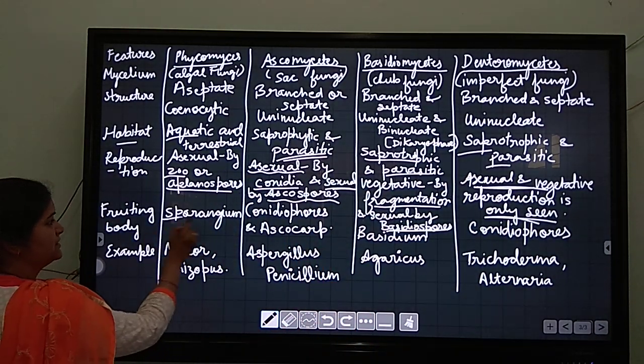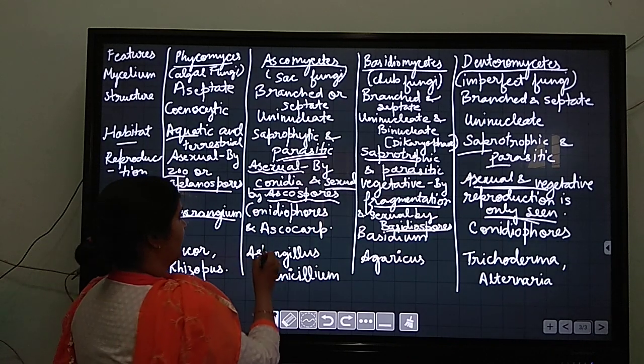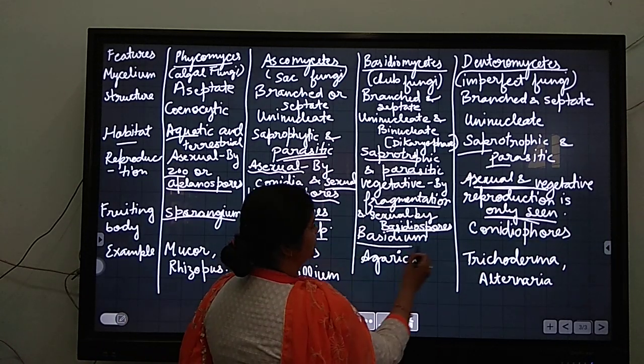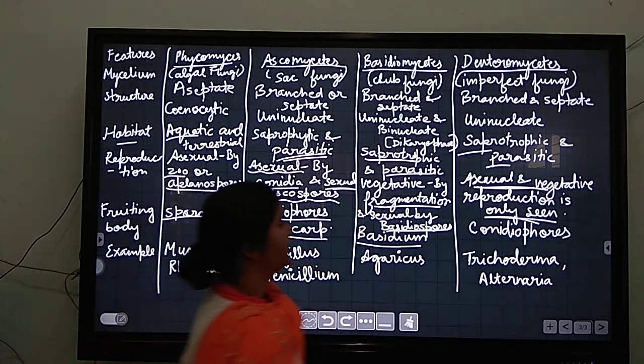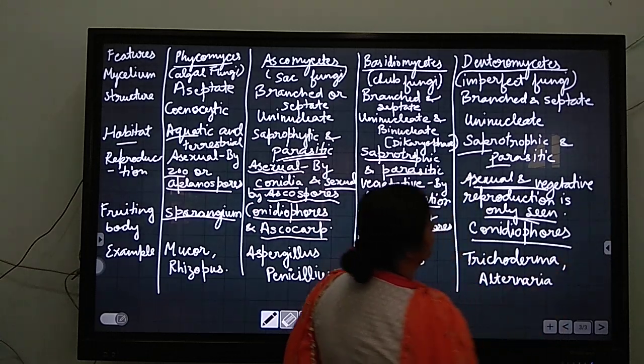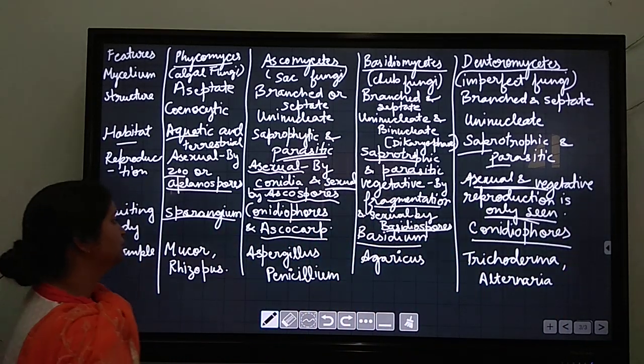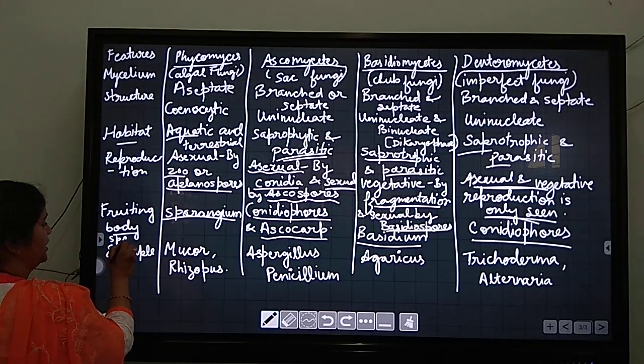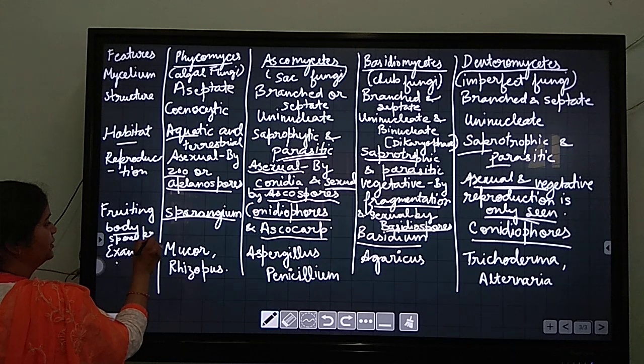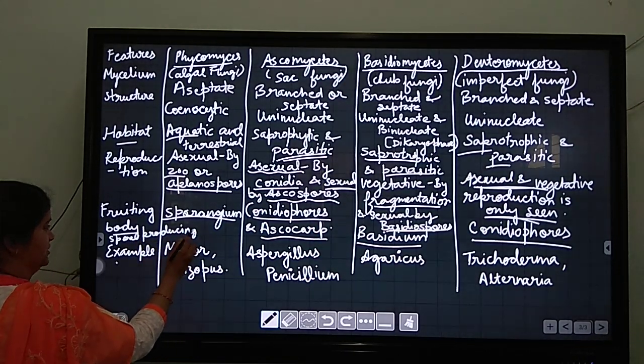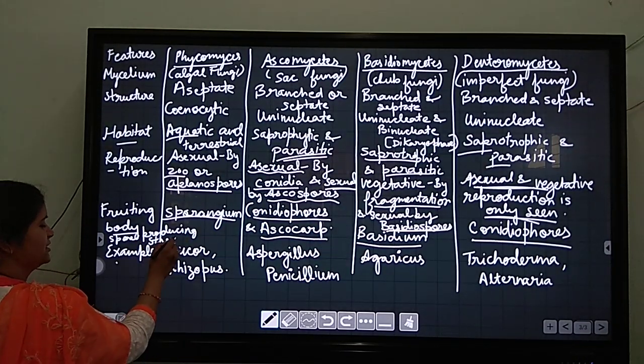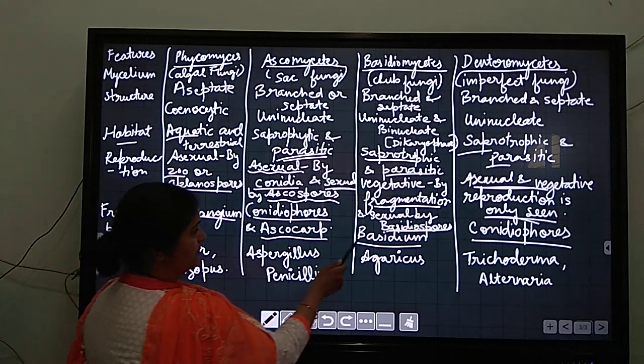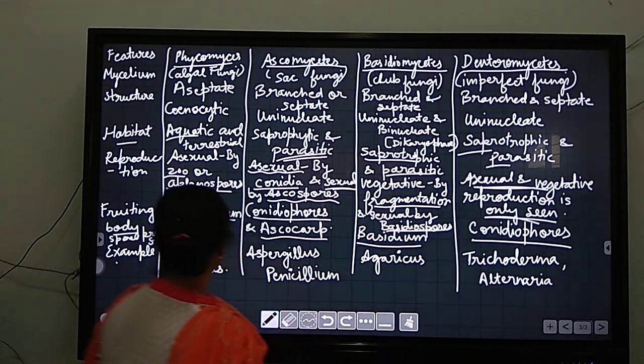Here fruiting body is sporangium in phycomycetes, and here the fruiting body is known as conidiophore and ascocarp in ascomycetes. Here the fruiting body is known as basidium. And deuteromycetes the fruiting body is known as conidiophore. These are the fruiting bodies - spore-producing structure is known as fruiting body. So fruiting body for phycomycetes is sporangium, ascocarp for ascomycetes, basidium and conidiophore.